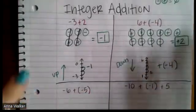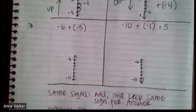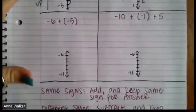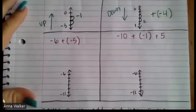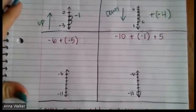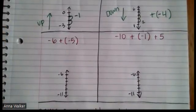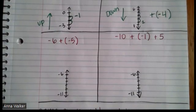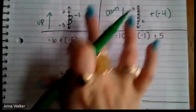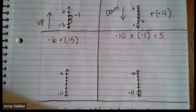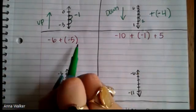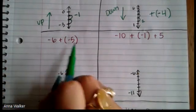Let's look at two more examples. If you weren't able to see the setup clearly, you can pause and set it up. Otherwise, let's continue. We have negative six plus negative five. You'll notice both of our numbers are negative here, whereas before one was positive and one was negative.